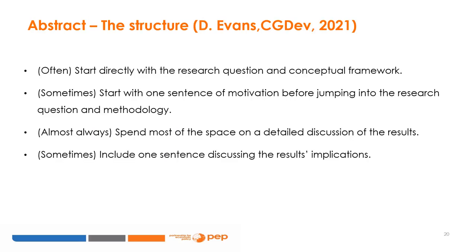Once you know what goes into your abstract, the next important step is how to organize your ideas in it. Often start directly with the research question and conceptual framework. Sometimes start with one sentence of motivation before jumping into the research question and methodology. Almost always spend most of the space on a concise discussion of the results. And sometimes include one sentence discussing the results' implications.